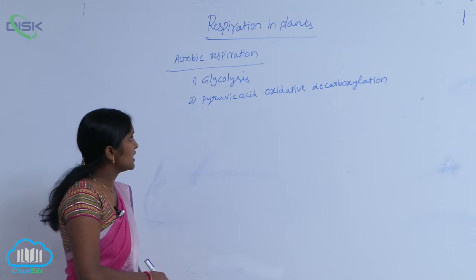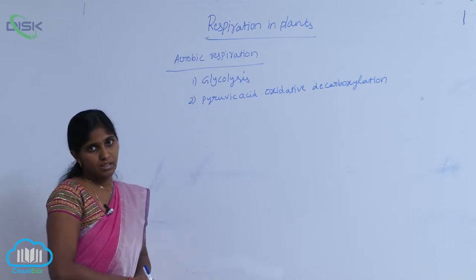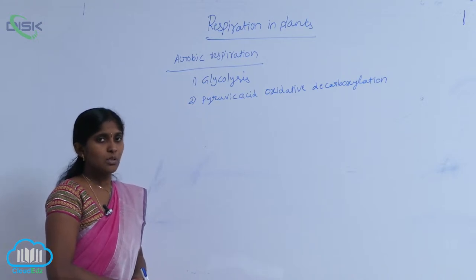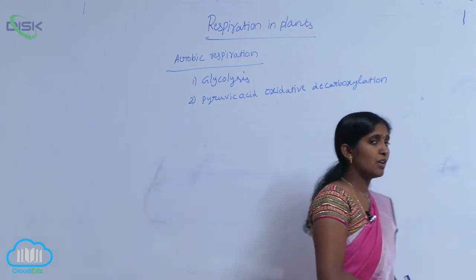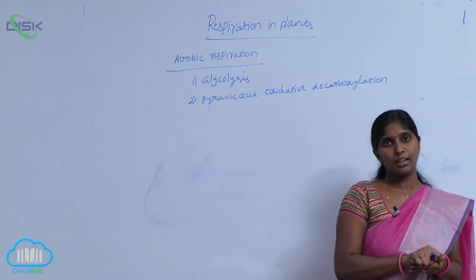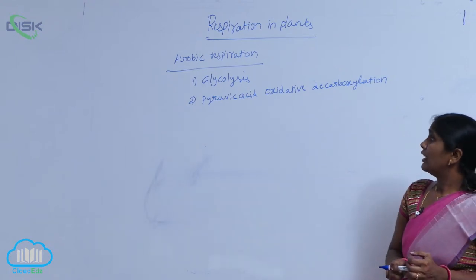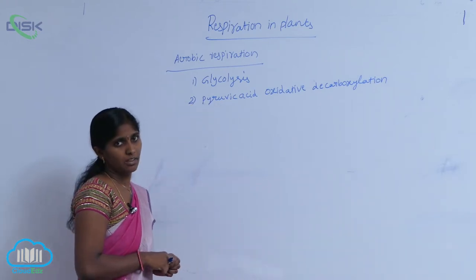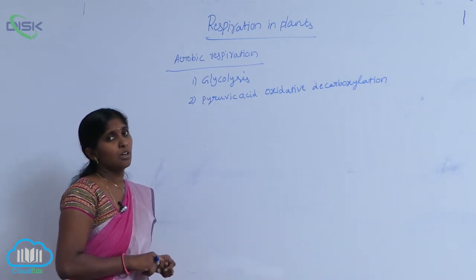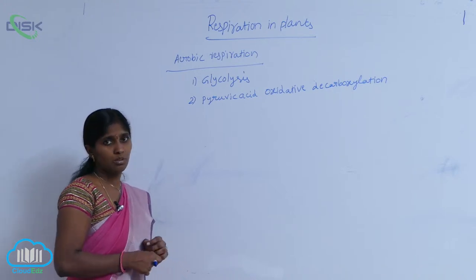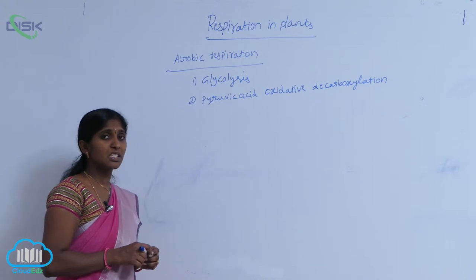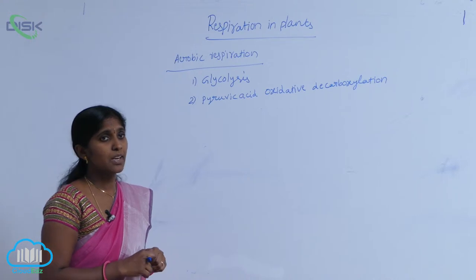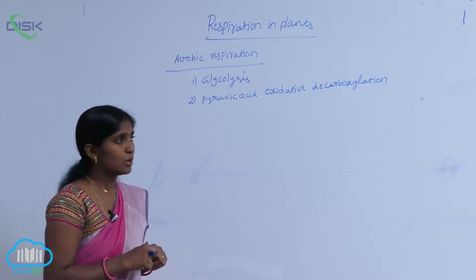The pyruvic acid is oxidized into acetyl-CoA. Acetyl-CoA is the form that enters the Krebs cycle. A decarboxylation reaction also takes place here, so carbon dioxide molecules are released. This is the intermediate reaction between glycolysis and the Krebs cycle.